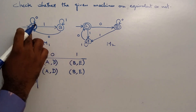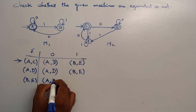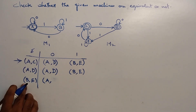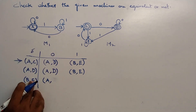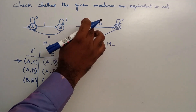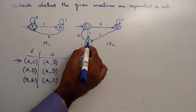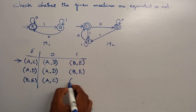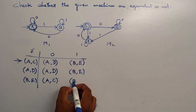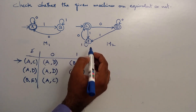Continuing the transitions: B on 0 gives A, and E on 0 gives C. B on 1 gives B, and E on 1 gives E. So from pair (B, E): on input 0 we get (A, C), which is already a known state pair, and on input 1 we get (B, E), the same state — a self-loop.